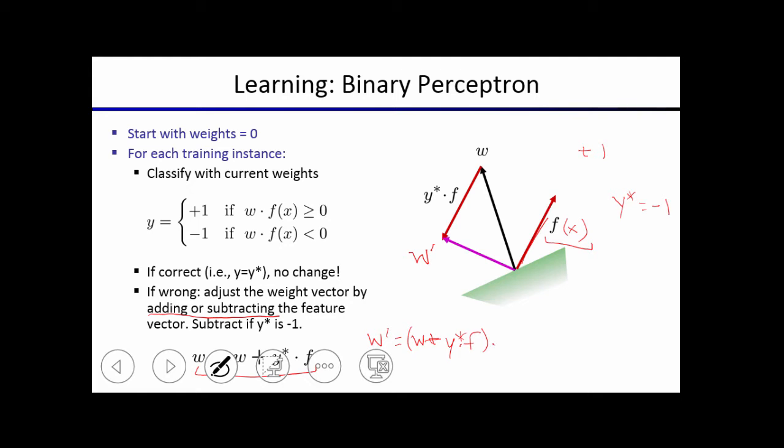But what you'll see is that if you take this new weight vector and dot product with f, the result is the original prediction, which is w dot f plus y star times f dotted with itself. And because a vector dot product with itself is always positive, the new classification based on the new weight vector will be closer to y star.